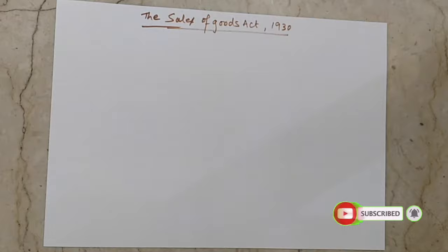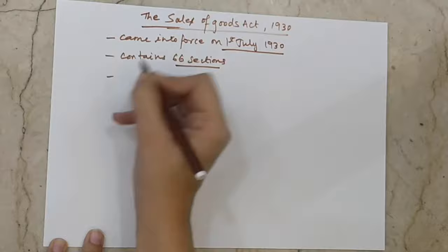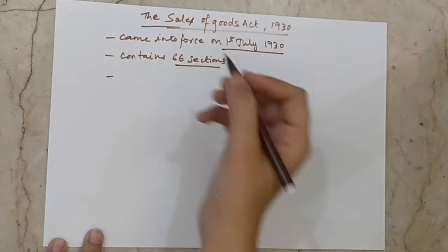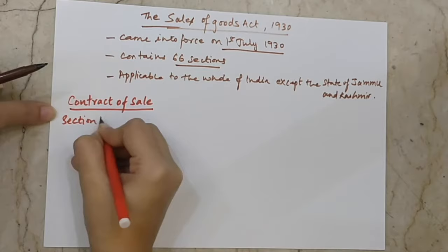This act came into force on 1st July 1930. It has 66 sections and is applicable in India except the state of Jammu and Kashmir. Now let's see how the contract of sale is made — let's look at its definitions and essentials.